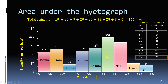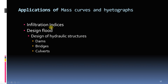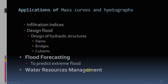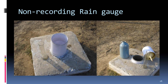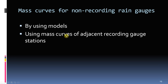This can be seen here. Next, we will discuss the applications of mass curves and hydrographs. We will use the hydrograph to calculate infiltration indices in future videos. Hydrographs are also used to find design flood, which is required for the design of hydraulic structures like dams, bridges, and culverts. Hydrographs are also used for flood forecasting to predict extreme floods and for water resource management. However, most rain gauges are non-recording rain gauges, so the most common type of data available is daily rainfall data. Mass curves are not readily available since there are fewer recording rain gauges. This can be addressed by using models, empirical formulae, or by using the mass curve of adjacent recording rain gauges.